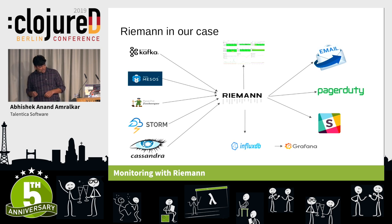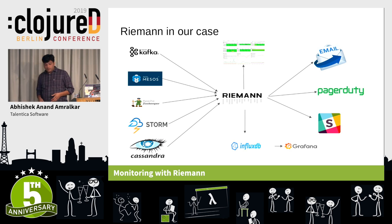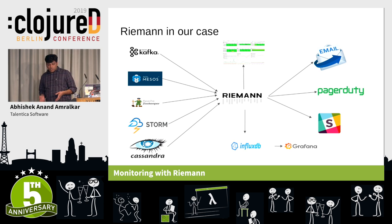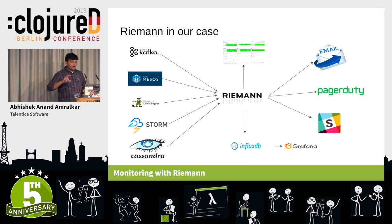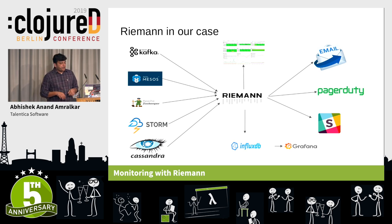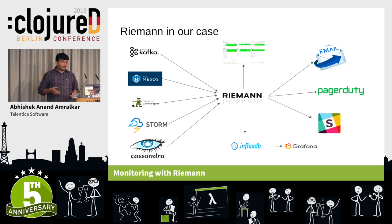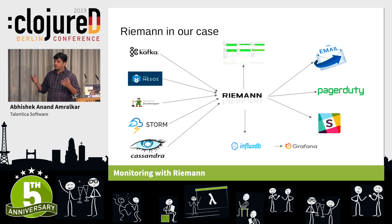In our case, we use whatever distributed systems we have in production: Apache Kafka, Apache Mesos, Zookeeper, Storm, Cassandra — all are sending their events to Riemann. Riemann comes with a dashboard gem called Riemann Dash. For time series we send to InfluxDB, and if something exceeds a threshold, we send an email, PagerDuty, or Slack alert. We also use Grafana for viewing historic charts.